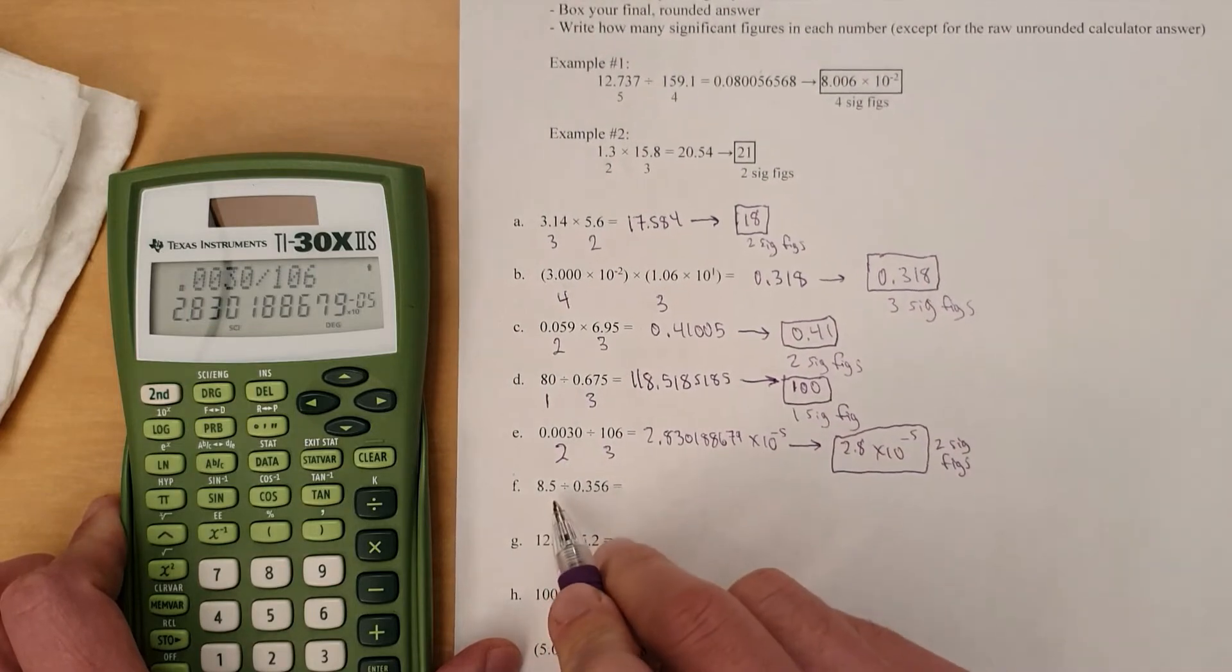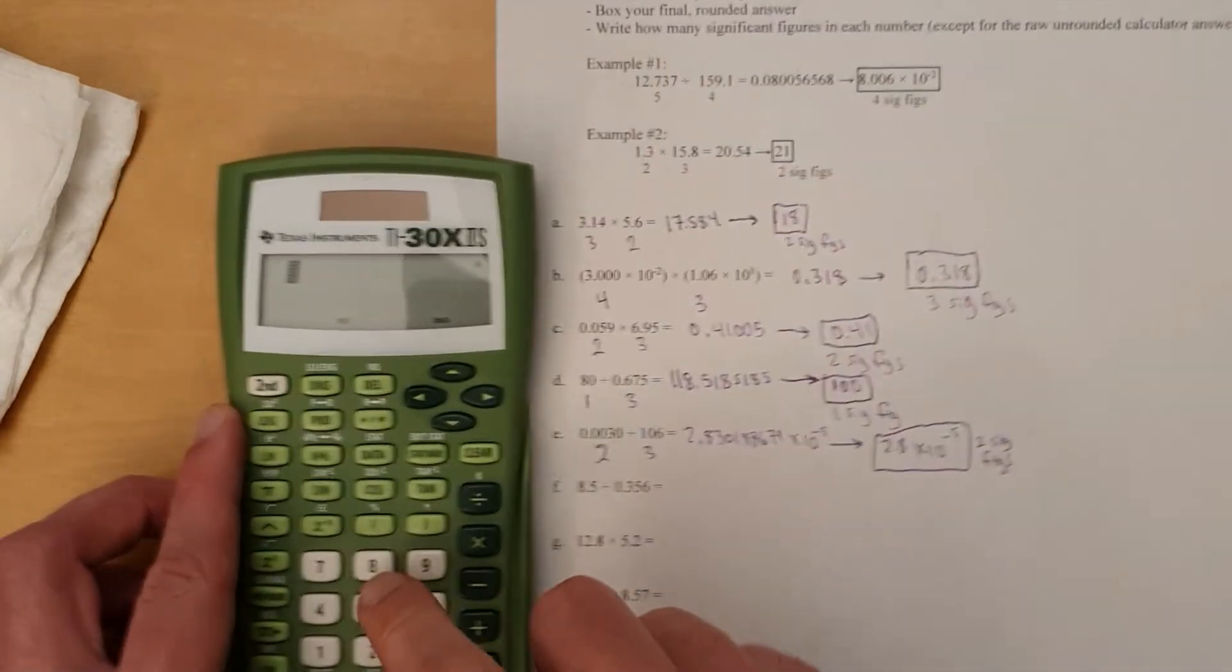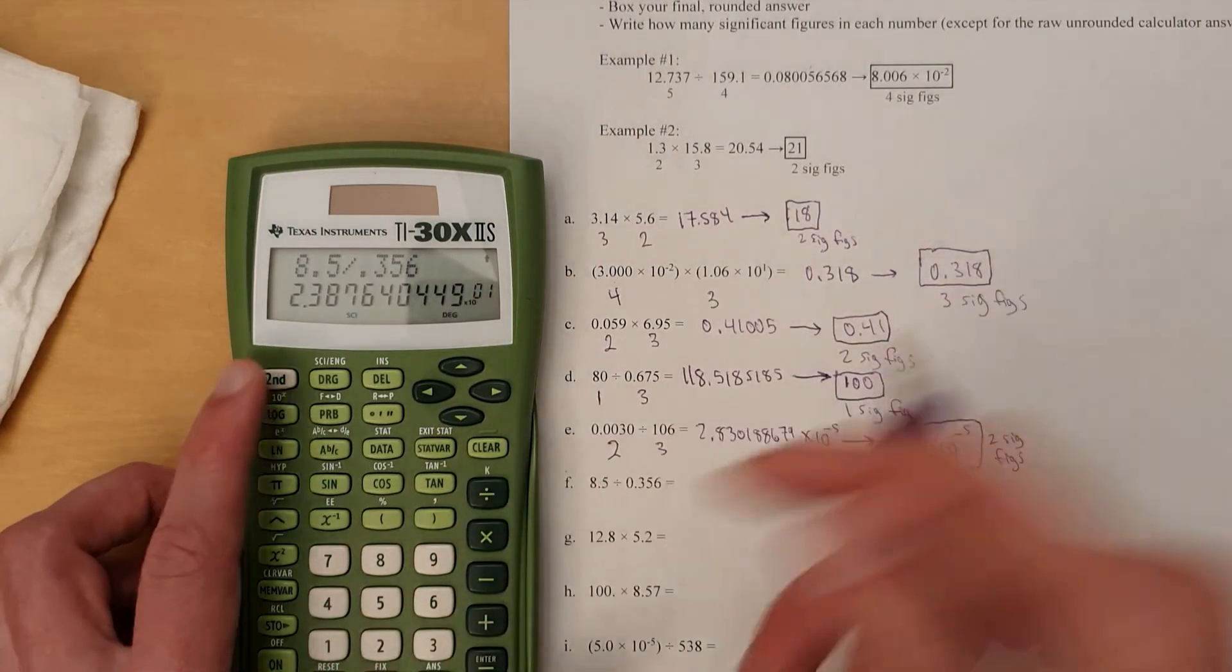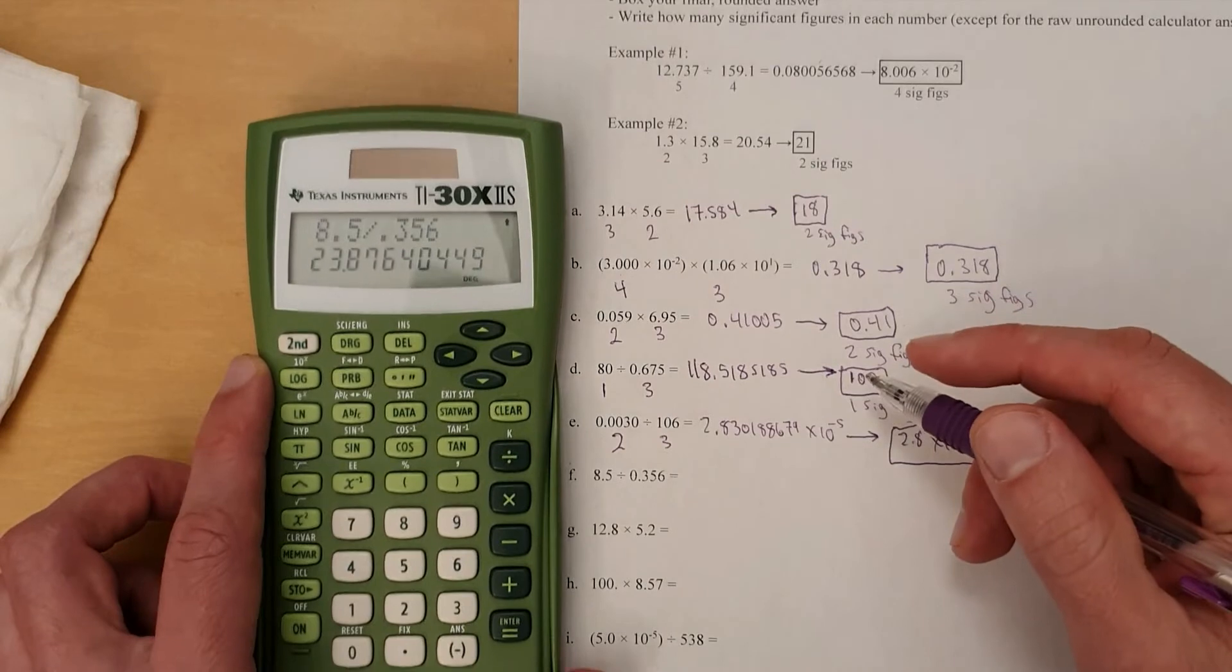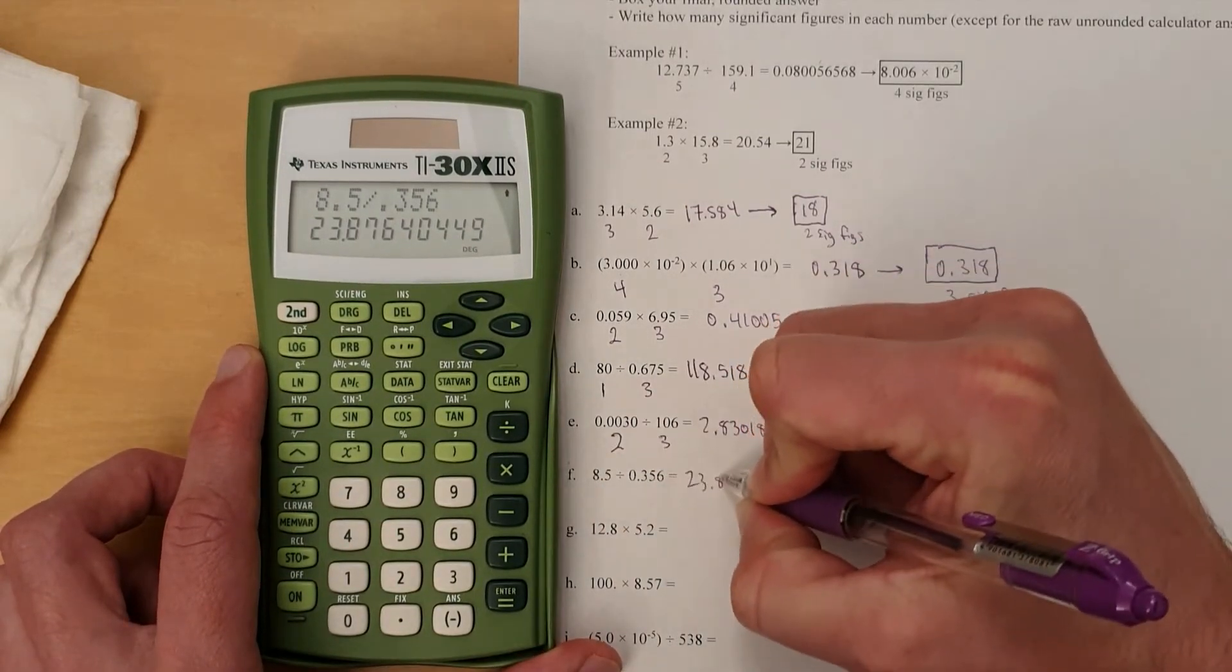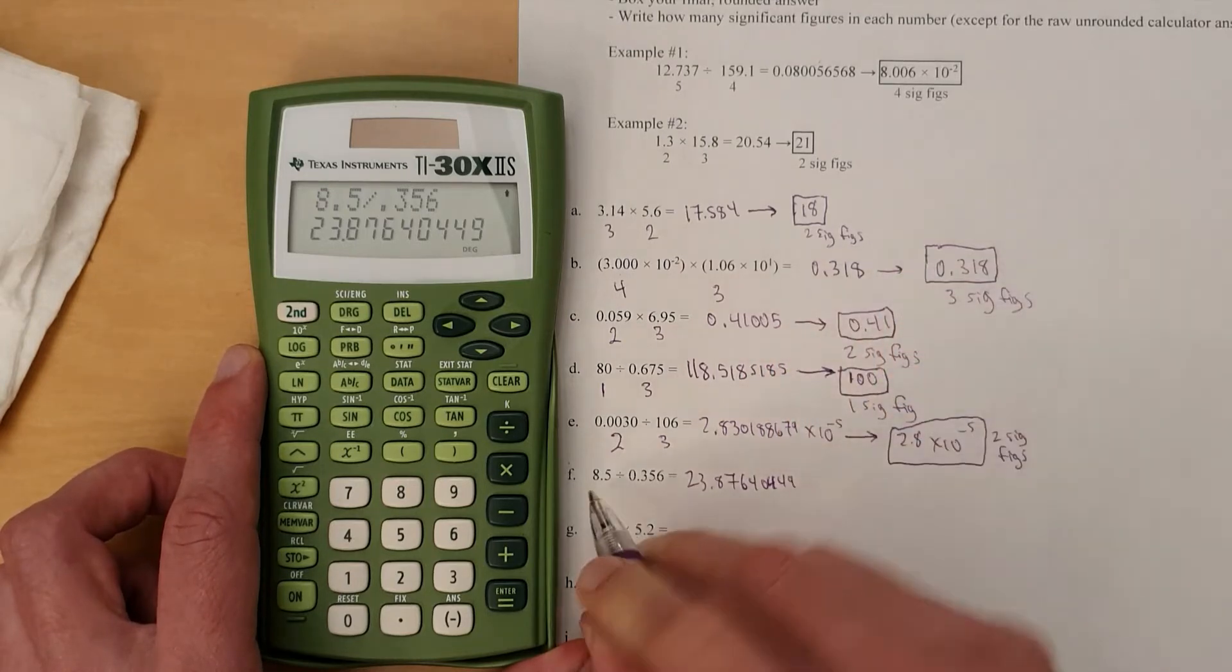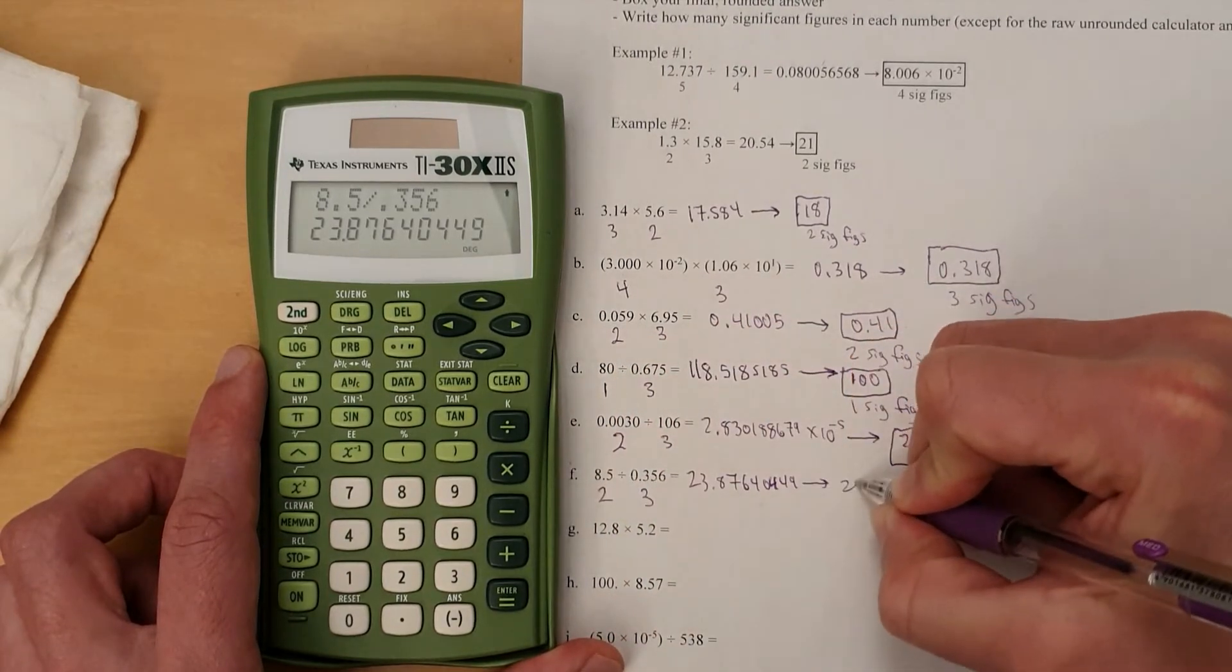All right, onward. 8.5 divided by that. 8.5 divided by 0.356. I've still got it in scientific notation mode. Put it back to regular mode right there. All right, 23.87640449. Two sig figs. Three sig figs. Round to two sig figs. That's just 24.